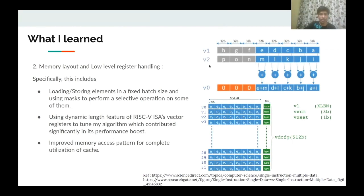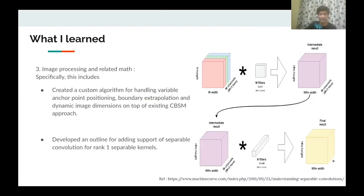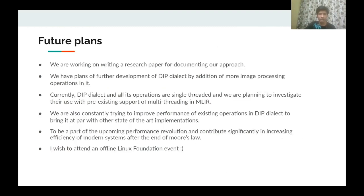The next area I learned was memory layout and low-level register handling, specifically loading, storing, prefetching, and processing elements of a register in a fixed batch size using masks. I was also exposed to the dynamic-length feature of RISC-V ISA's vector design, which helped improve my algorithm's performance significantly, as well as improved memory access patterns for complete cache utilization. I also created a custom algorithm for variable anchor point positioning and boundary extrapolation for dynamic image dimensions on top of an existing CBSM approach, and developed an outline for adding support of separable convolution for rank-one separable kernels.